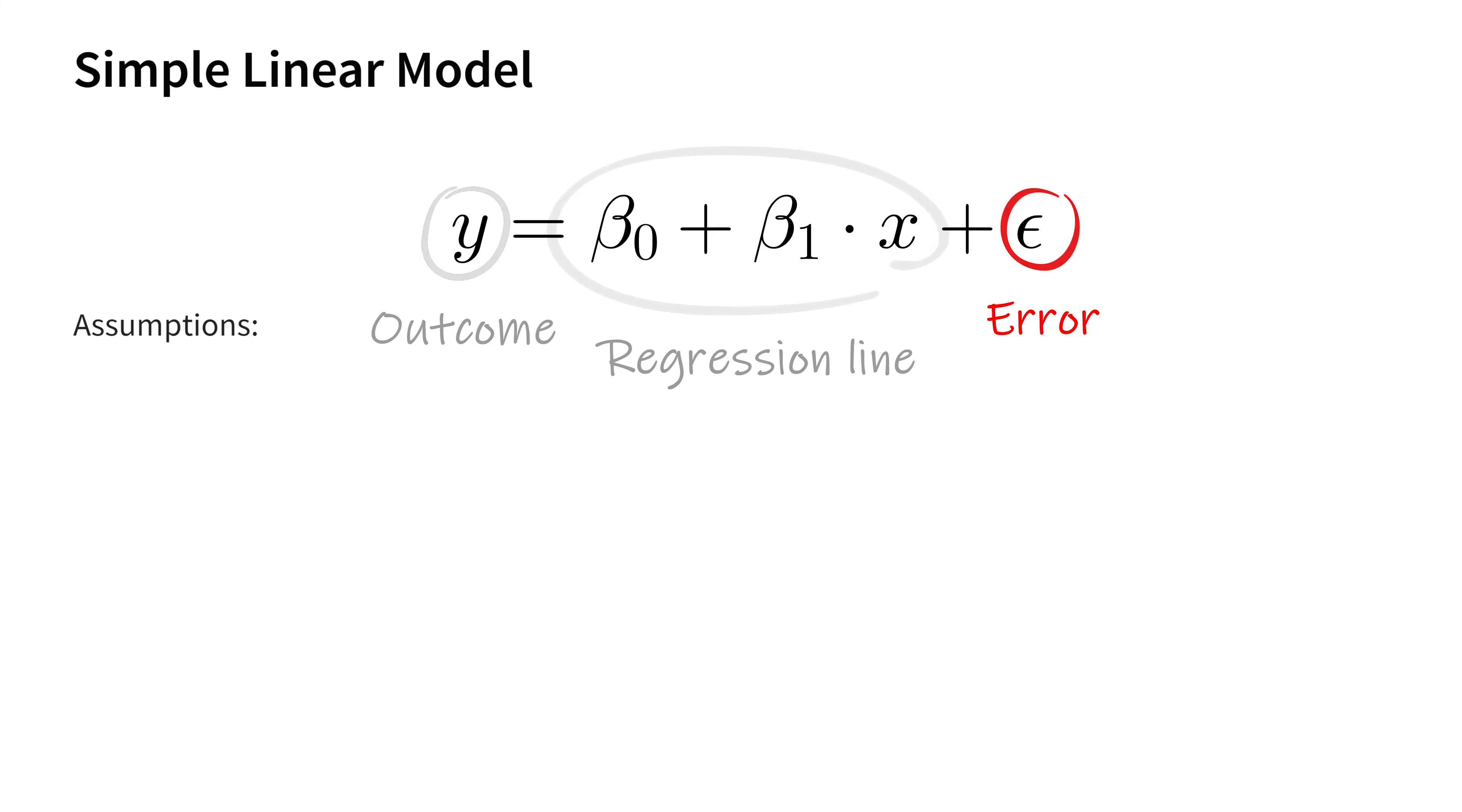These are in decreasing order of importance: independence, linearity, normality, constant variance, and though not really an assumption, we also often say that there should not be any influential outliers.